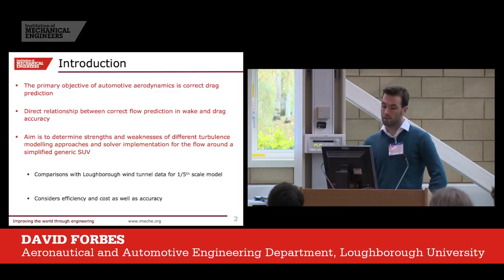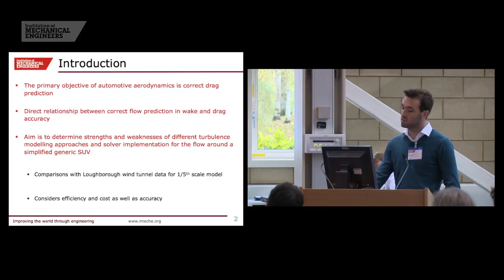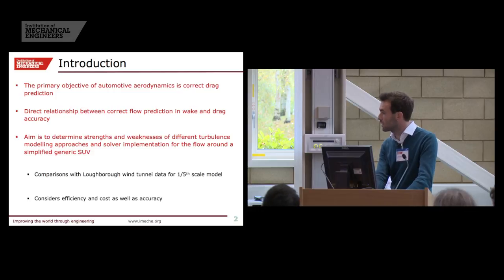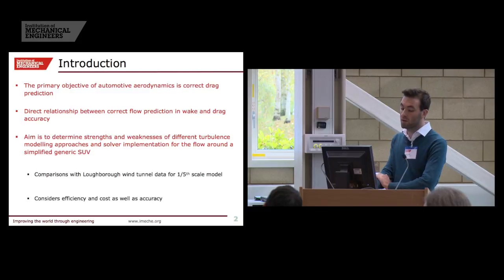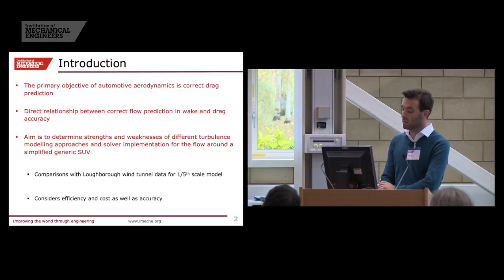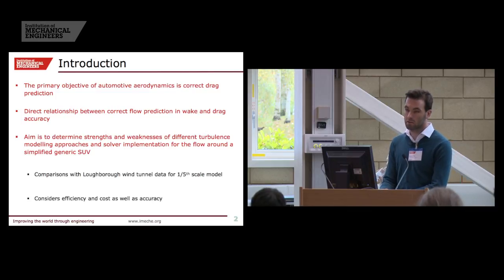To start with an introduction, the primary objective of automotive aerodynamics, or at least one of the primary objectives, is correct drag prediction. Computationally, there's a direct relationship between the correct flow prediction in the wake and this drag value. The aim of this study in particular is to determine strengths and weaknesses of different turbulence modelling approaches and how the solvers implement these for the flow around a simplified generic SUV model. I'll do this by comparing to experimental data obtained in the Loughborough University wind tunnel — a fifth scale model. As well as flow accuracy, this study will also consider computational cost and efficiency.